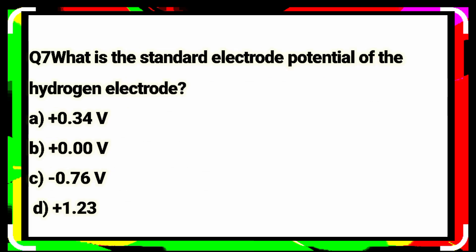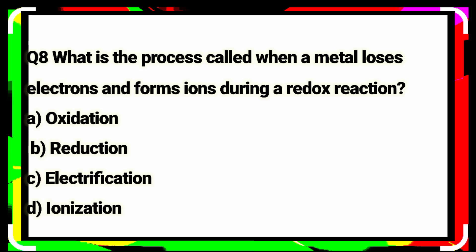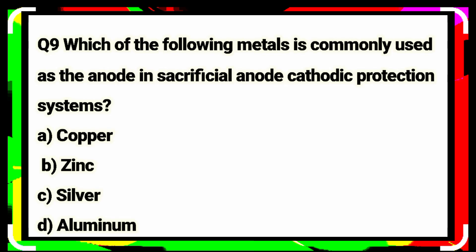Question number seven: what is the standard electrode potential of the hydrogen electrode? Zero volts. Option B is the correct answer. Question number eight: what is the process called when a metal loses electrons and forms ions during a redox reaction? Oxidation.